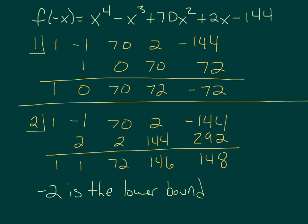This is worth keeping an eye out for so you don't end up trying all kinds of different numbers. The original equation had negative 144 as its constant term, and there are all kinds of factors of 144. If you're going through and checking them all, it might take a long time. So when you run into this situation, you can stop — there's no need to keep going any further.